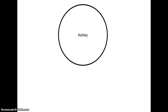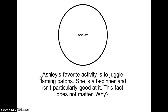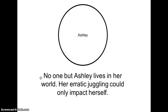This circle right here is a world. There's only one person who lives in this world and her name is Ashley. Whatever action Ashley takes, it will never have a positive or negative impact on anyone else. She can do whatever she wants to, whenever she wants to, however she wants to do it — she has complete freedom. Ashley's favorite activity in this world is to juggle flaming batons. She is a beginner and isn't particularly good at it, but this fact does not matter, because Ashley is the only person who lives in her world. Her erratic juggling can only ever impact herself.